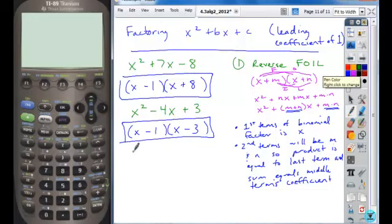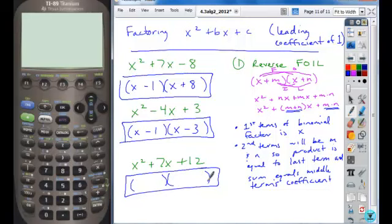So try this one. See if you can factor this expression. Are you able to do it quickly? So our first terms are x's. Are there two factors of positive 12 whose sum is the middle term's coefficient, plus 7?